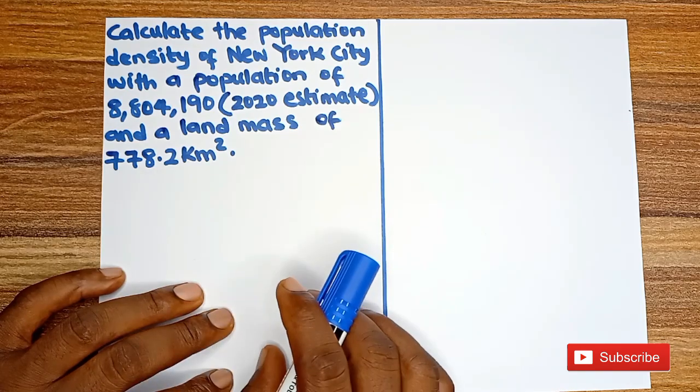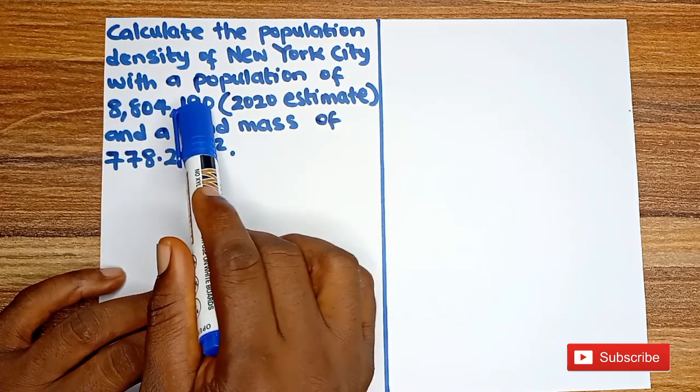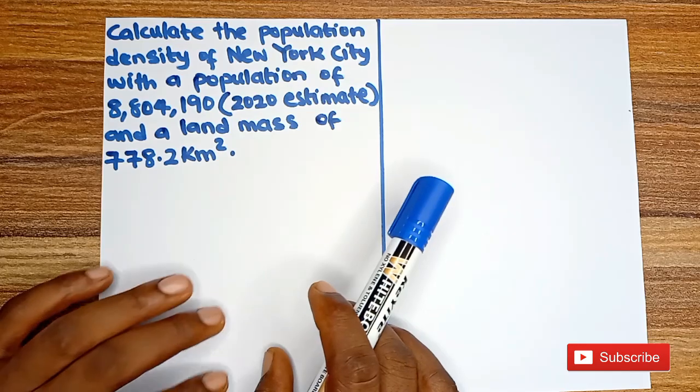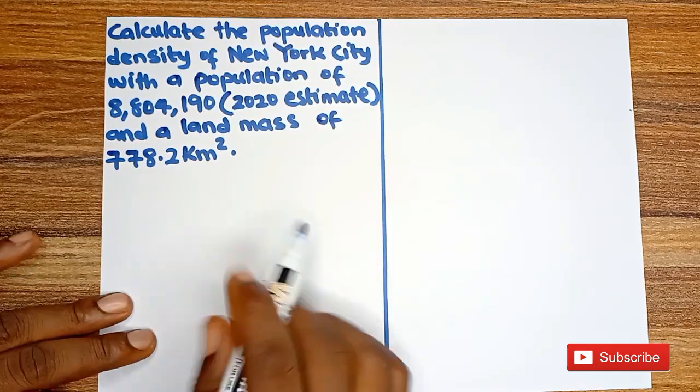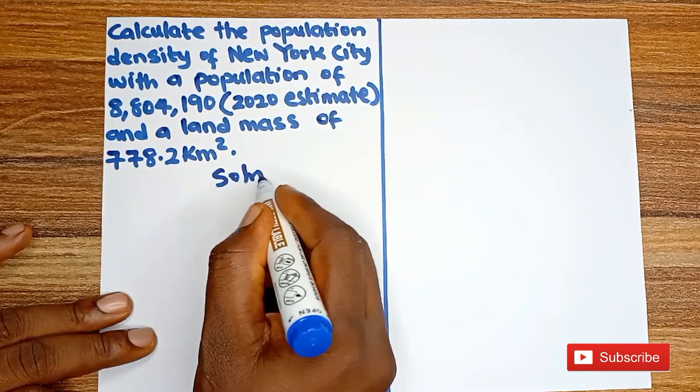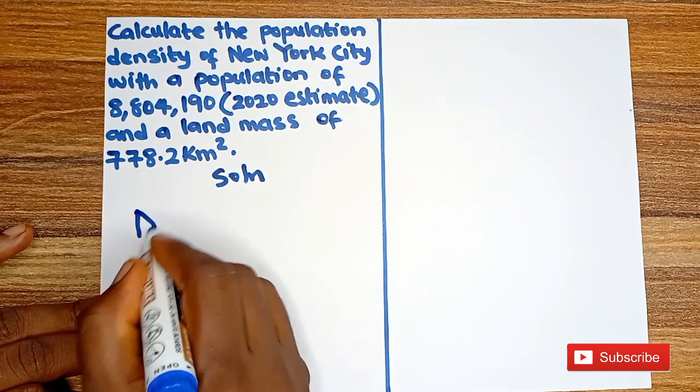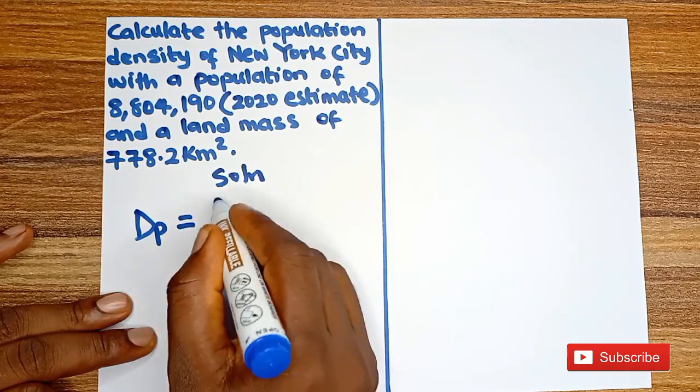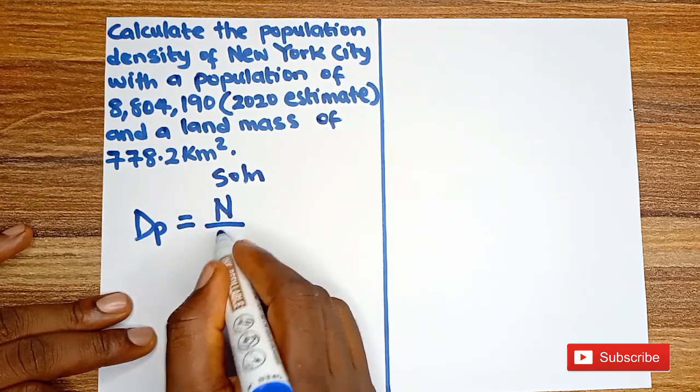So this question offers us those two things. We know the population and we know the size of the city. So to calculate this, the formula to calculate population density is equal to number of people all over area.